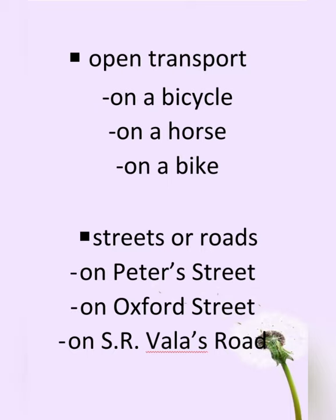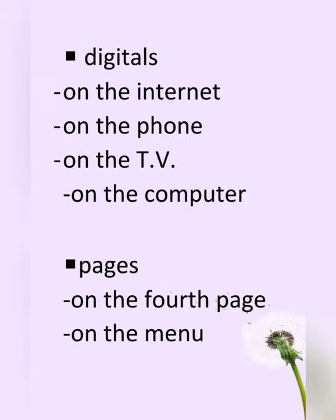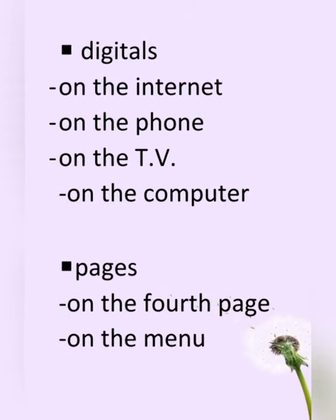We also use 'on' for names of streets or roads: on Peters Street, on Oxford Street, on SR Wallace Road. Remember, do not mix this up with an address — here they are just the names of the streets or roads. Also for digital: on the internet, on the phone, on the TV, on the computer. And for pages: on the fourth page, on page 26, on the menu.